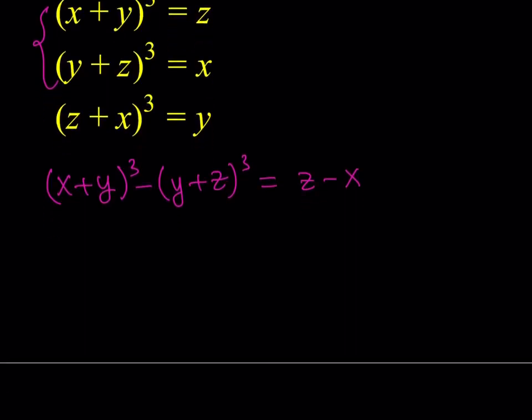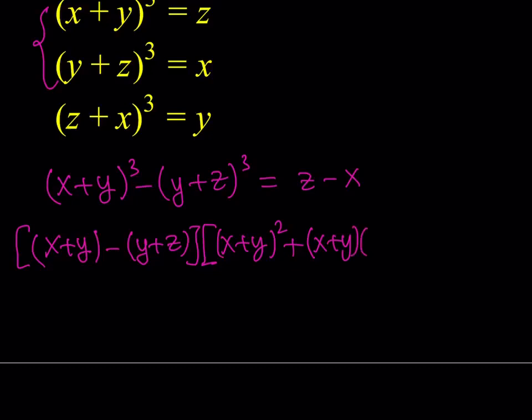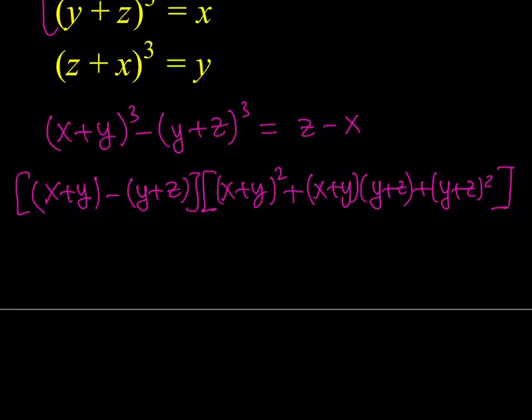So let me use the formula. A³ minus B³ equals (A - B) times the second factor: A² plus AB plus B². Using substitution here, this becomes [(x+y) - (y+z)] times [(x+y)² + (x+y)(y+z) + (y+z)²]. Obviously, this expression takes up a lot of space, so we're not able to fit the second one. But that's okay. At the end, when we simplify this expression, we're going to set it equal to z minus x.